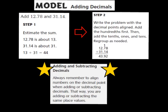Before we begin solving problems in this lesson, I want to talk about some steps we're going to follow as we are adding decimals. The model question is that we're going to add 12 and 78 hundredths and 31 and 14 hundredths. The first step is to estimate the sum.